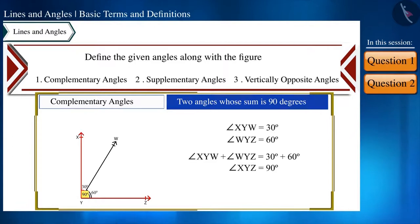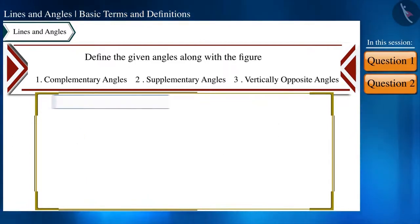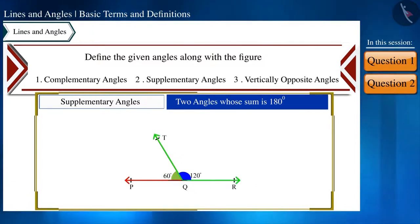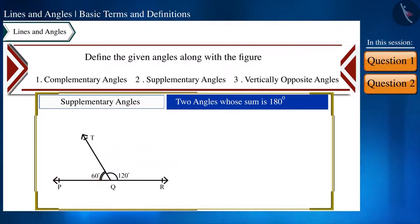That is, these two angles are complementary angles. Now let's see the definition of supplementary angles. If we obtain the sum of two angles as 180 degrees, then we call such angles as supplementary angles. Look at the figure.